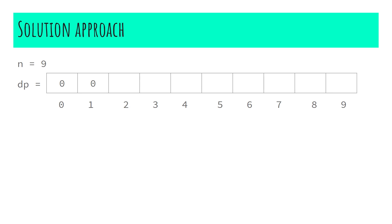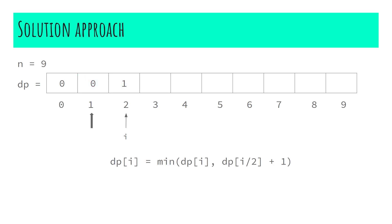I'm going to start iterating from the element at index two. First I'm going to add one to the preceding value of dp and store it in the current index: dp[i] = dp[i-1] + 1. The preceding value is zero, so adding one gives one. Since this index is divisible by two, we also check the minimum between the current value and dp[i/2] + 1. Here dp[i/2] is dp[1] which is zero, so dp[1] + 1 = 1. The minimum of both is one, so there is no change.